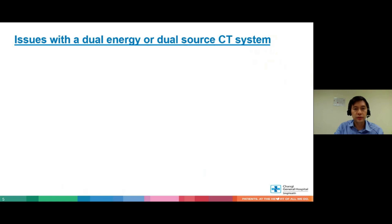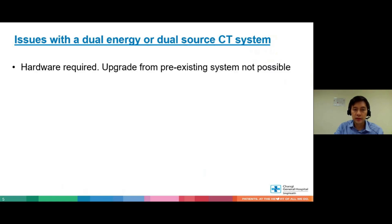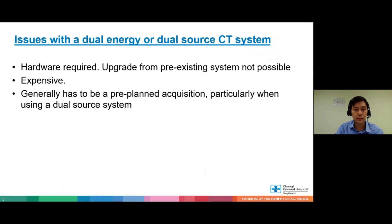The issue with dual energy or dual source systems is that it's actually a hardware requirement — you need a specific hardware system and can't upgrade from a pre-existing single energy system. It's quite expensive, and it generally has to be a pre-planned acquisition. You need to switch on your dual source tubes before imaging the lesion; you can't decide to do it retrospectively.